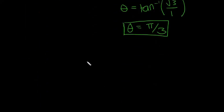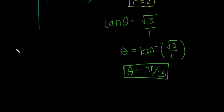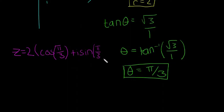So I'm going to write it over here. Z equals 2 multiplied by cos of pi over 3 plus i sine of pi over 3.